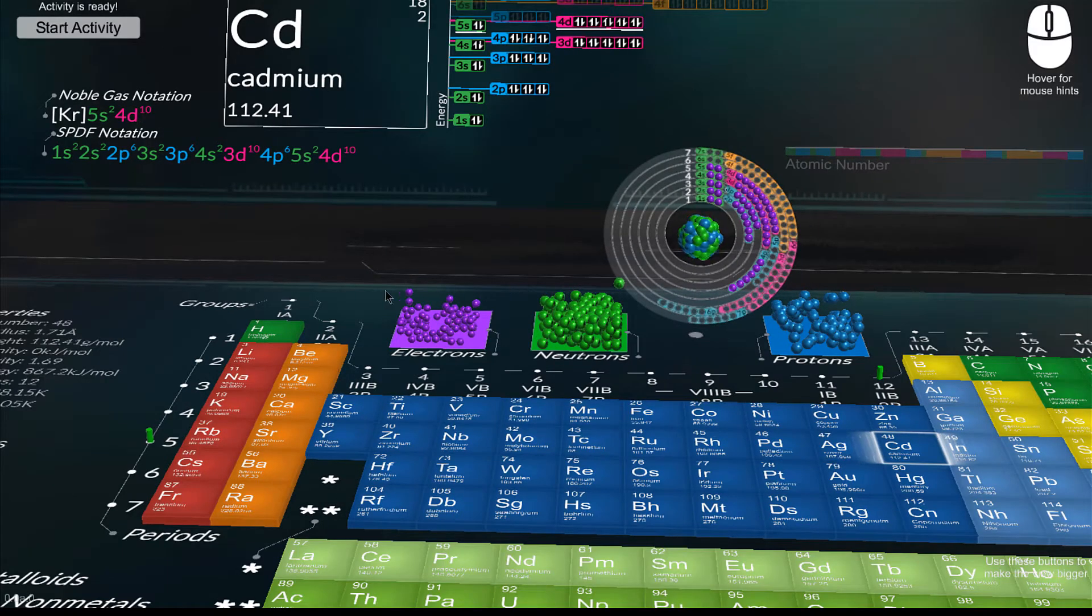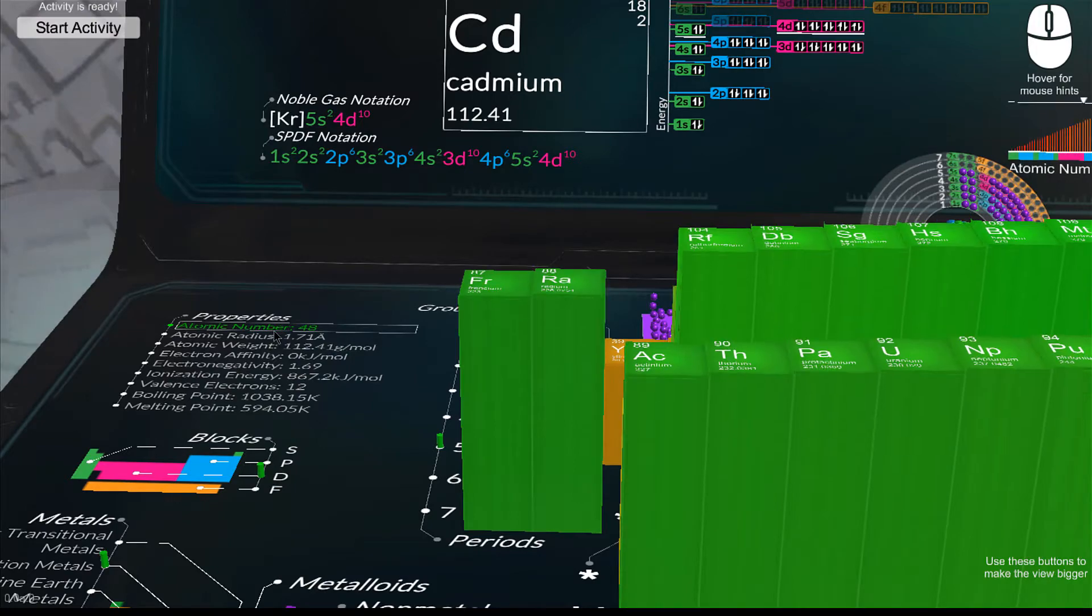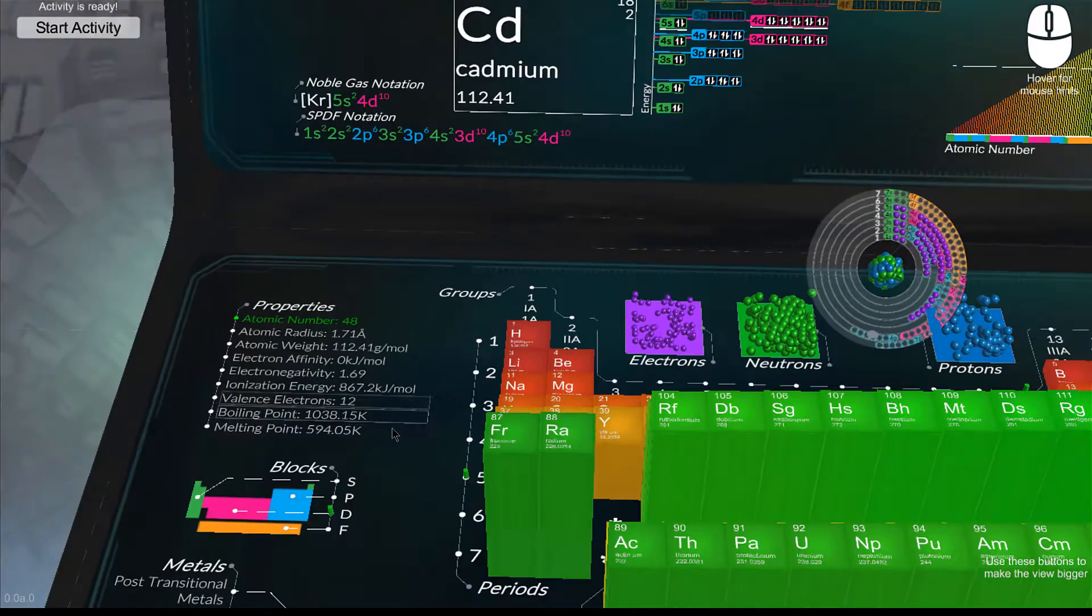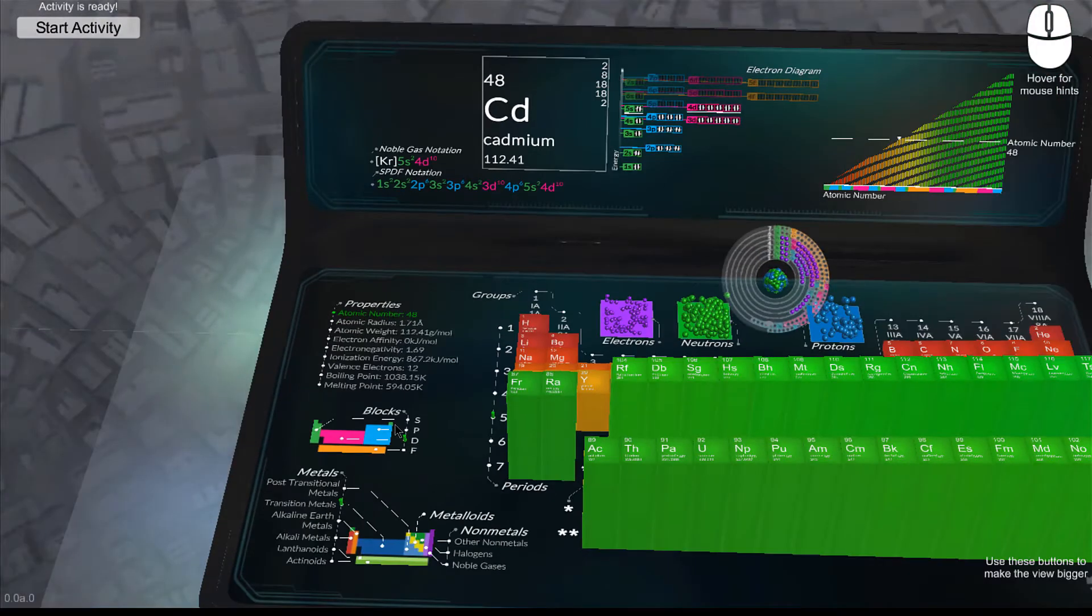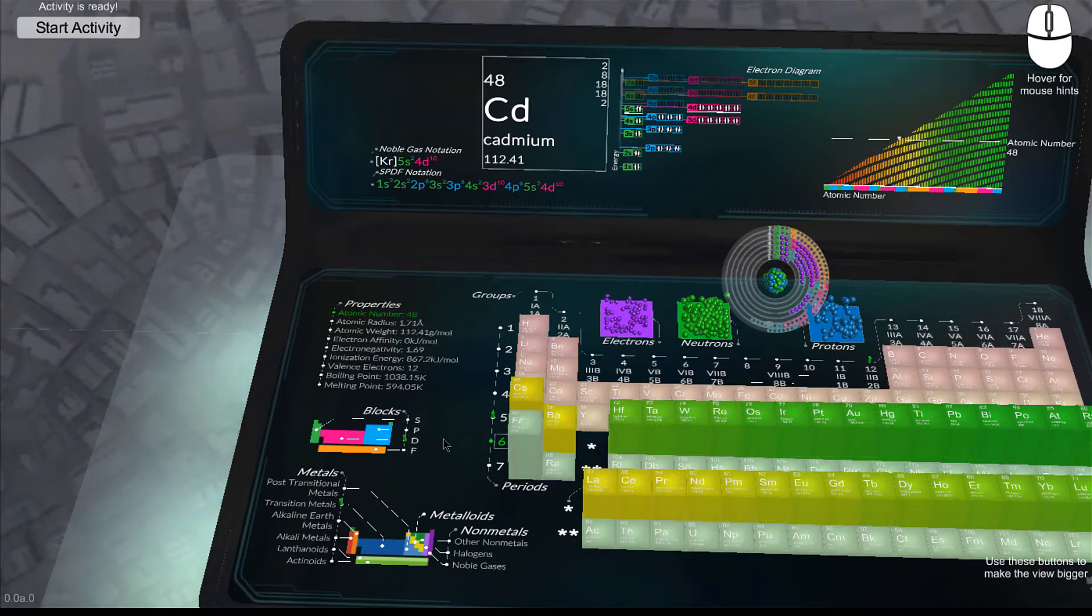All the elements properties are visible in one field of view. Clicking on a listing will produce a bar graph that shows precisely how the selected property varies across the periodic table. Different groups, periods, and blocks can be selected with just a click.